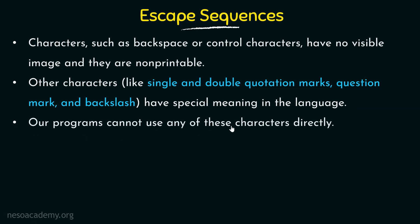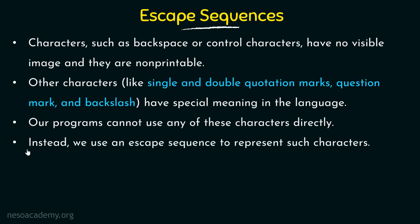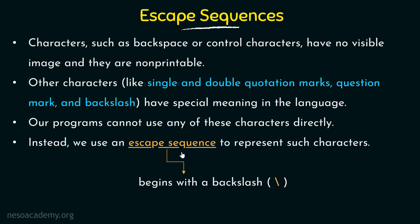Our programs cannot use any of these characters directly. Since our programs cannot use these characters directly, we will be making use of escape sequences. Instead, we use an escape sequence to represent such characters. Escape sequences will always begin with a backslash. We will always use a backslash in front of the escape sequence to denote that it is an escape sequence. Let us see some examples of the escape sequences that are there in the C++ programming language.